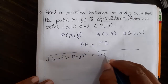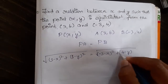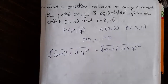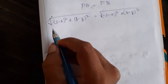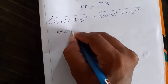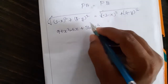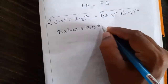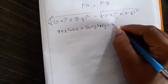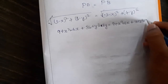Squaring both sides to cancel the square roots. Expanding (3-x)²: 9 + x² - 6x. Then (6-y)²: 36 + y² - 12y. On the right side, (-3-x)²: 9 + x² + 6x. And (4-y)²: 16 + y² - 8y.